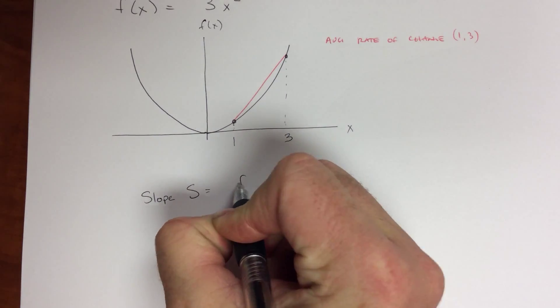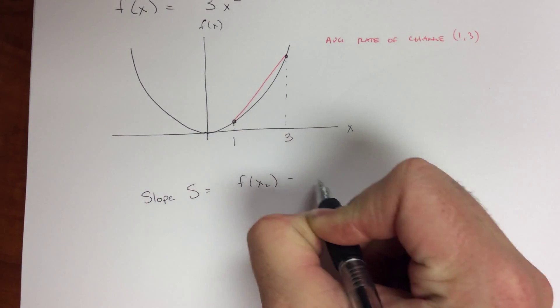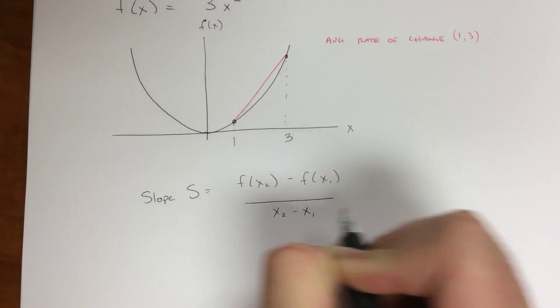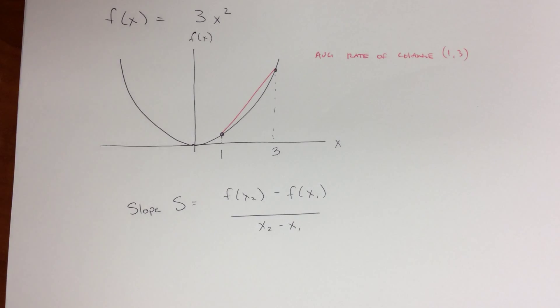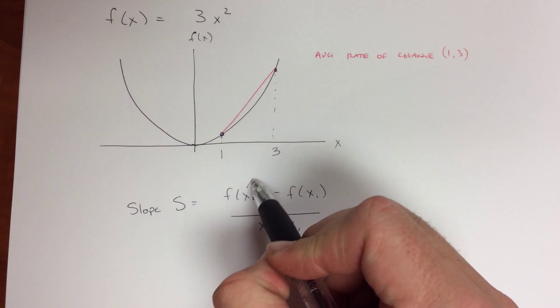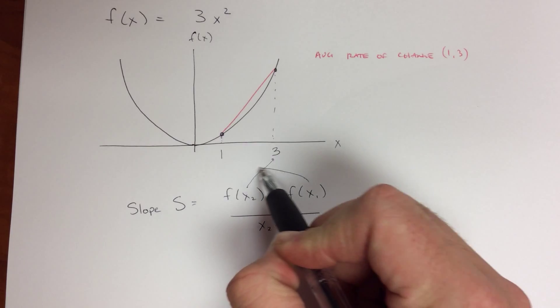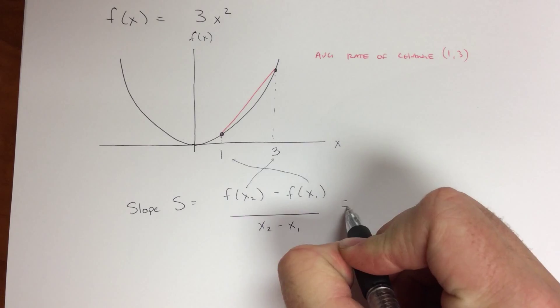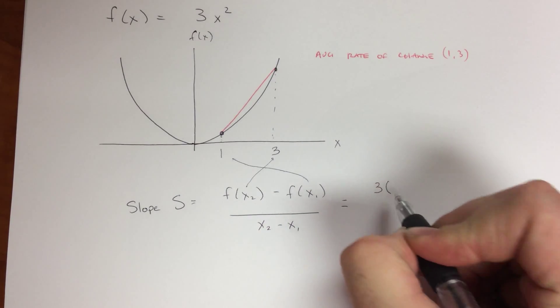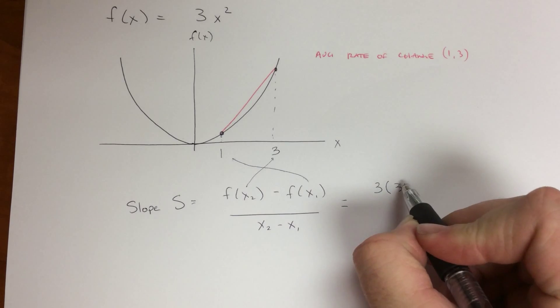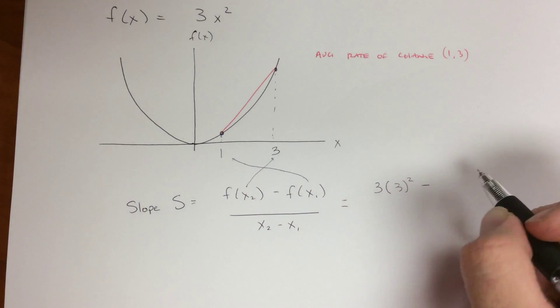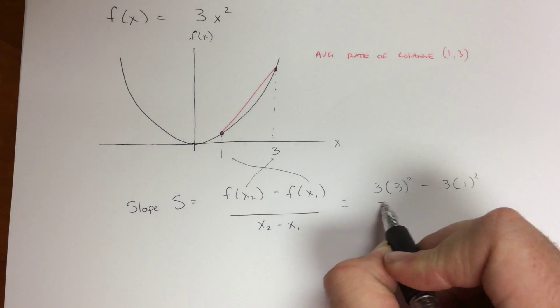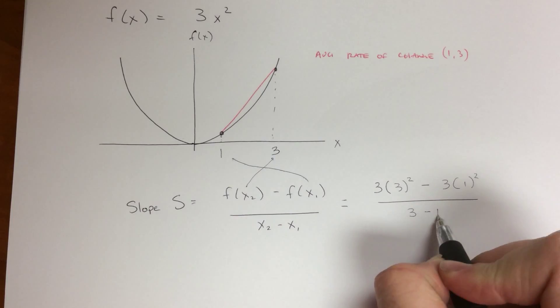So the slope of the secant is f(x₂) minus f(x₁) all over x₂ minus x₁. Alright, so my function is 3x squared. So my x₂ is 3, my x₁ is 1, and so I'm just going to plug these numbers in. So I get f(x) is 3, x₂ is 3, so it's 3 squared, minus f(x₁), which is 3 times 1 squared, all over x₂ minus x₁, which is 3 minus 1.